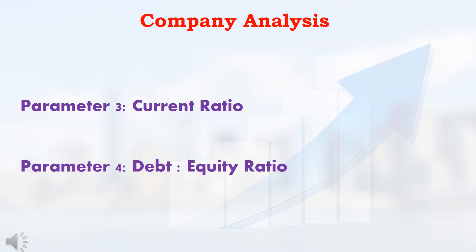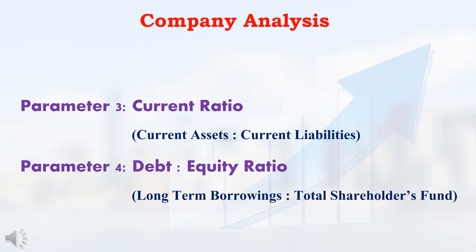In company analysis, for screening good stocks, we are using 8 parameters. In those 8 parameters, the 1st and 2nd parameters we had seen in the 3rd video. In this video, we are going to see the 3rd and 4th parameters. The 3rd parameter is Current Ratio — we are going to compare current assets with current liabilities. The 4th parameter is Debt-to-Equity Ratio — we are going to compare long-term borrowings with total shareholders fund.